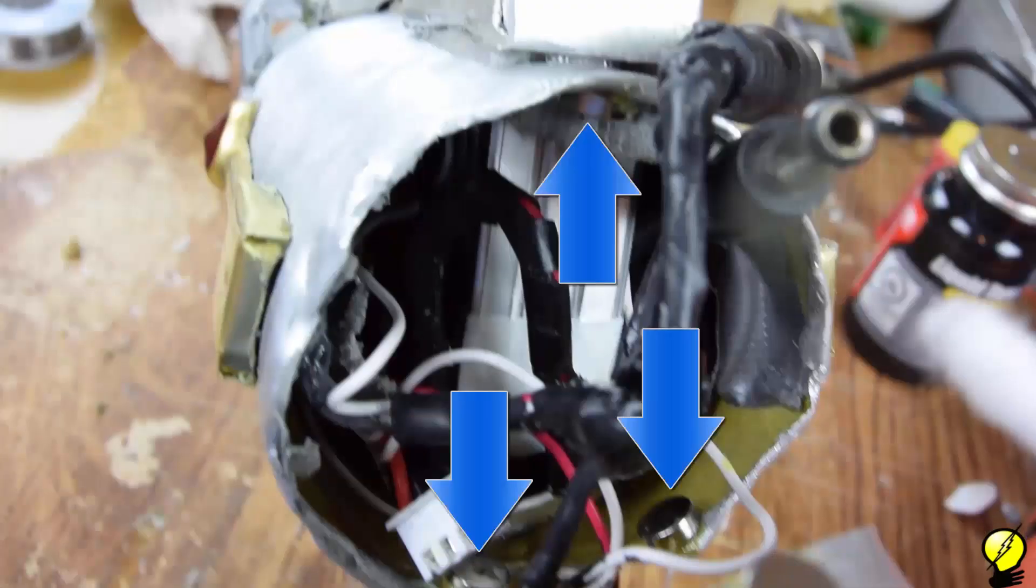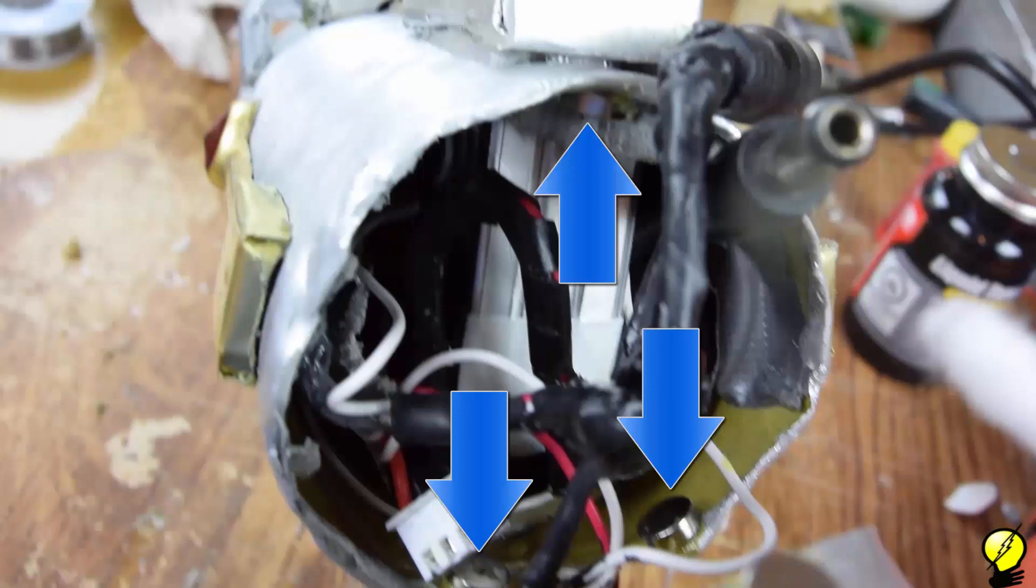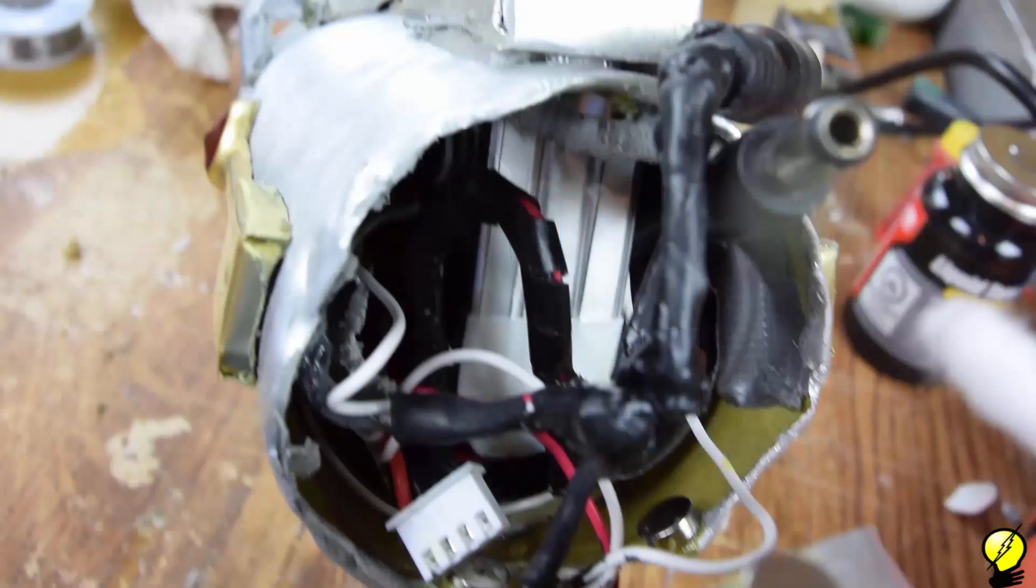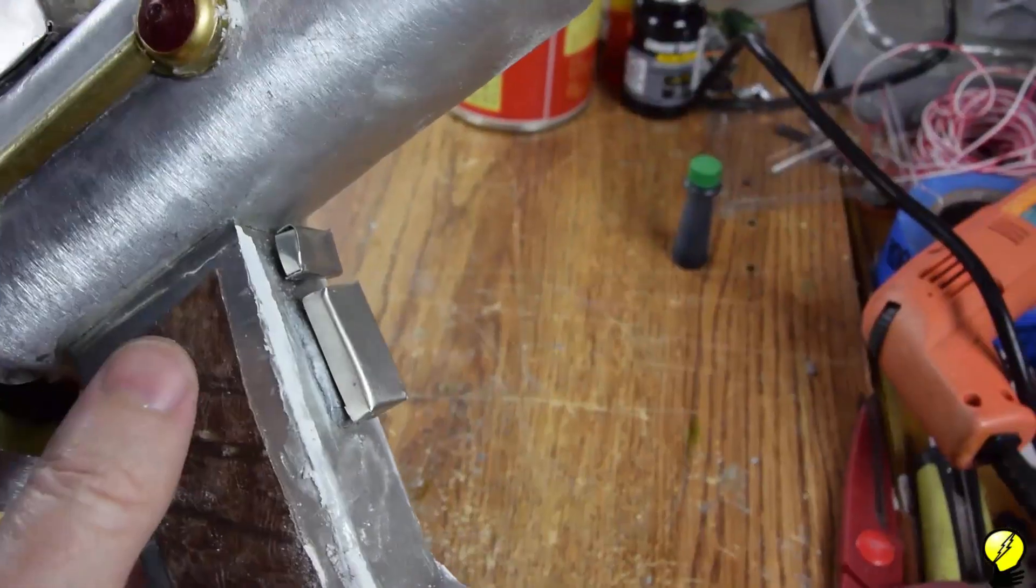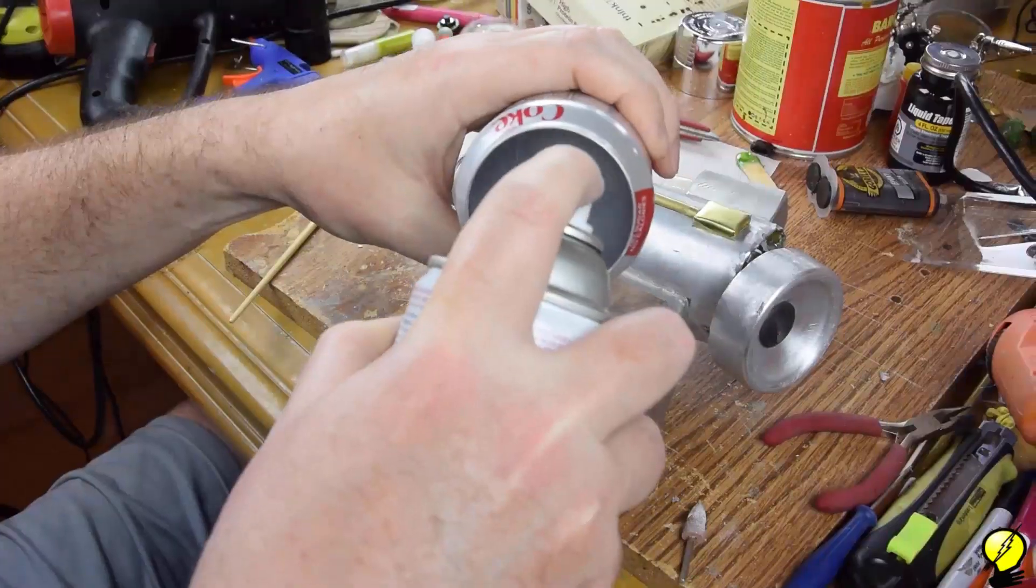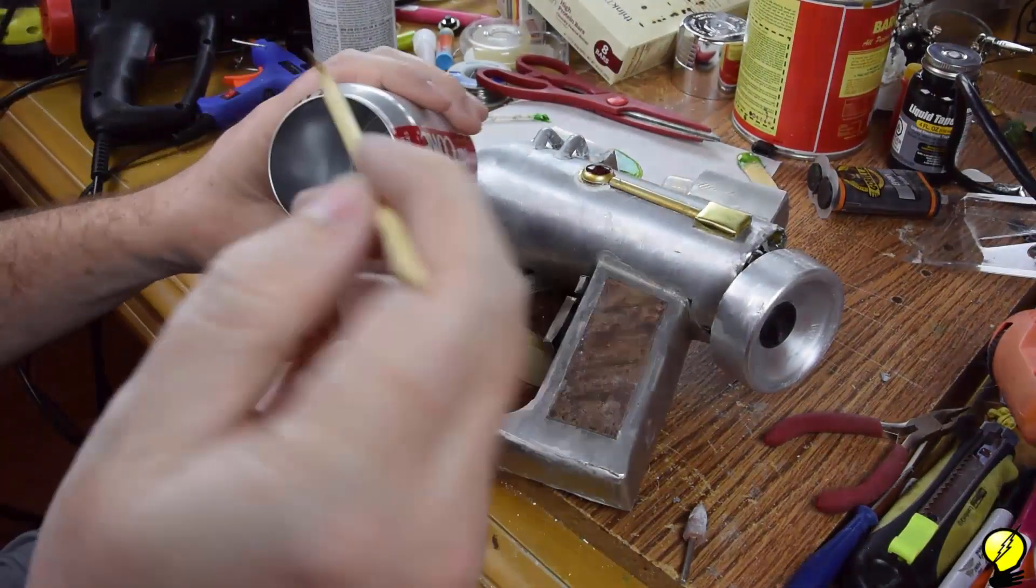To hold the end cap in the back of the canister, glue down some magnets. Here you see three on the inside of the canister. And I have three matching sets on the inside of the end cap. For any gaps, use spackle or wallboard joint compound, sand it down, and then paint it to hide the seams.